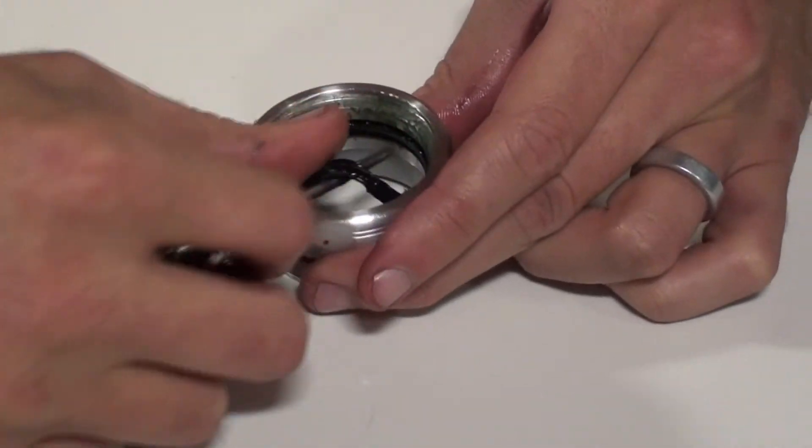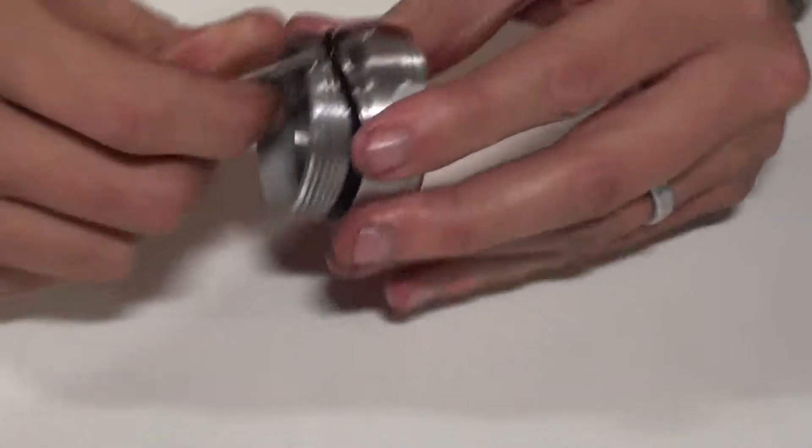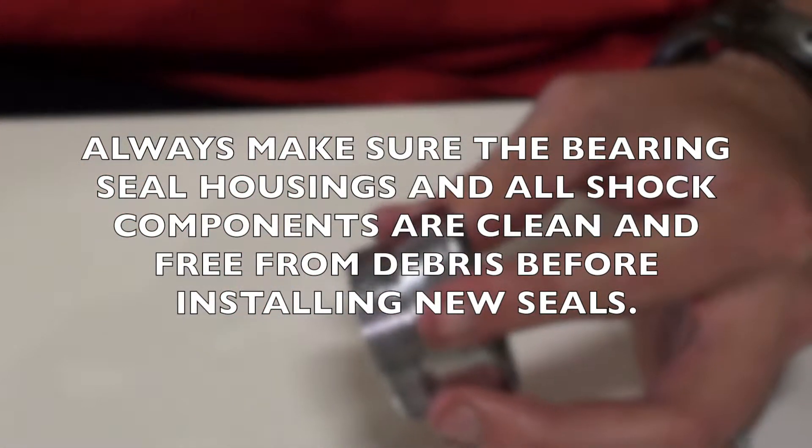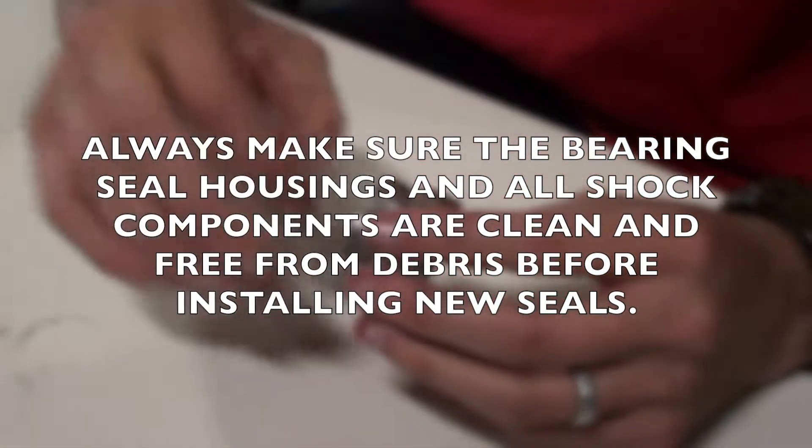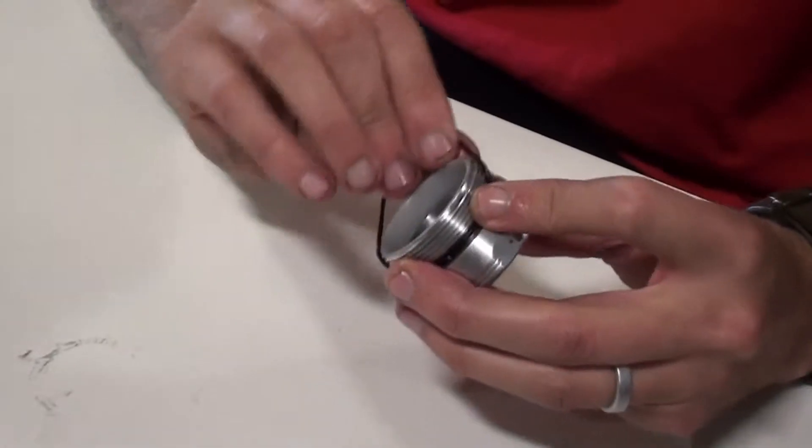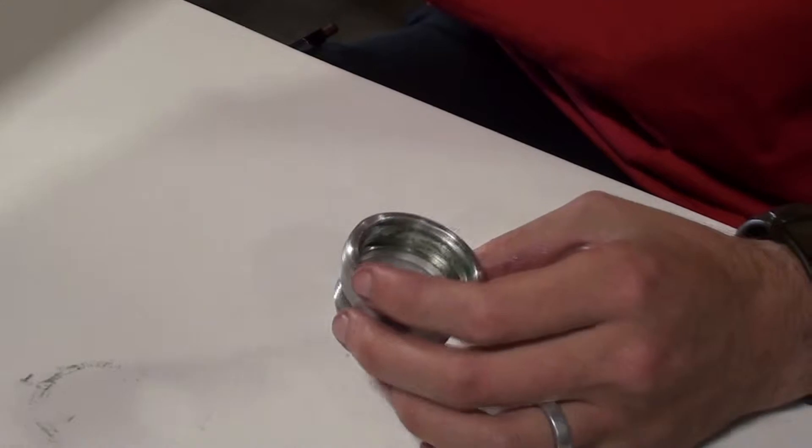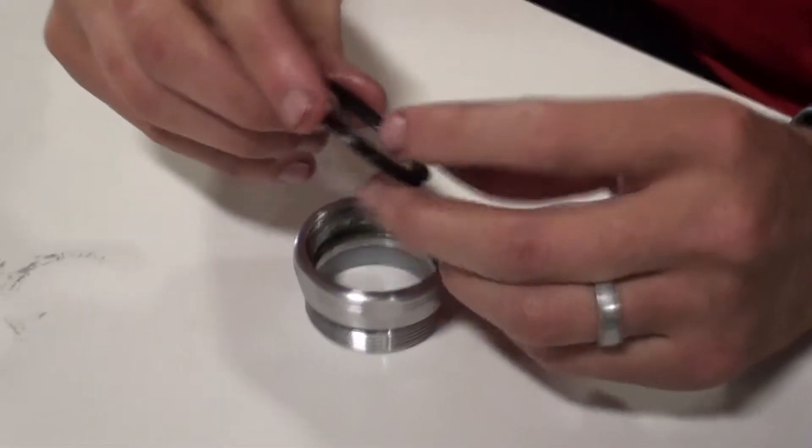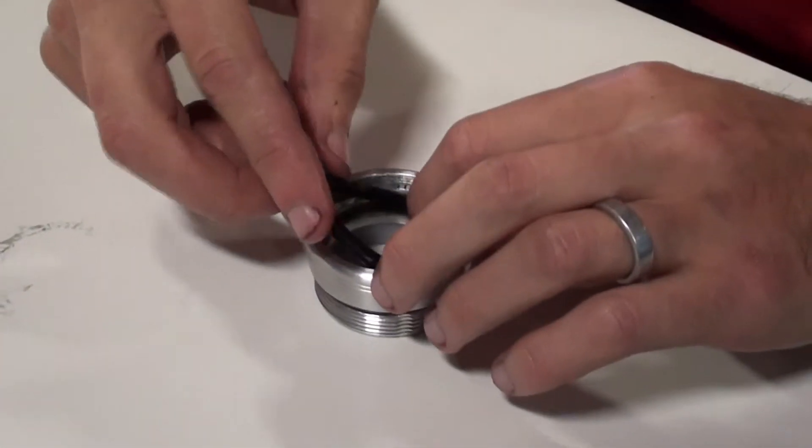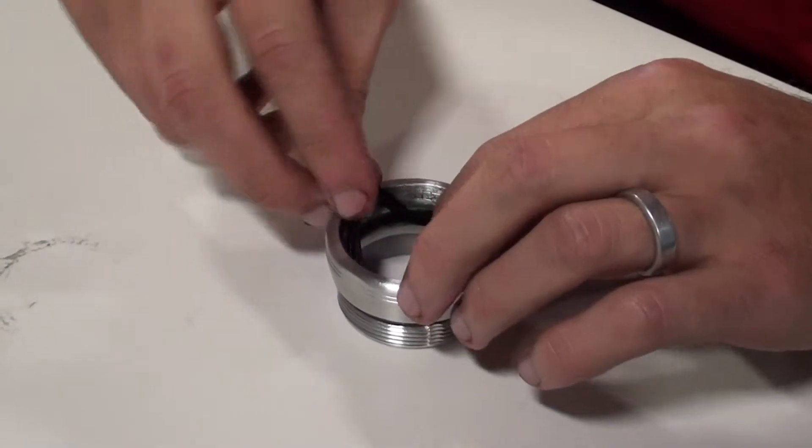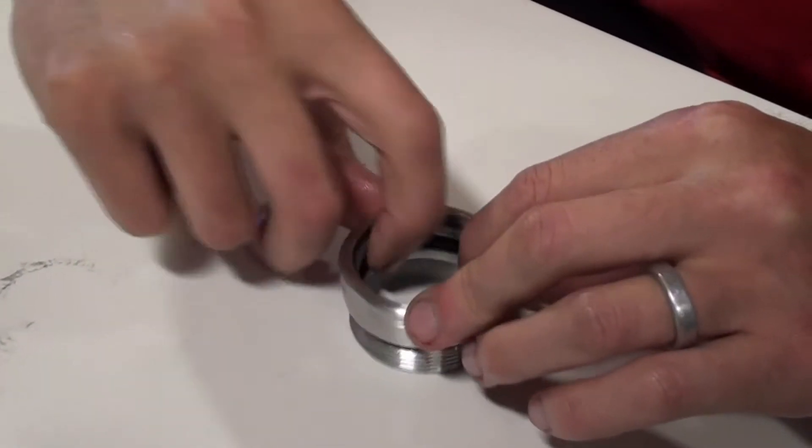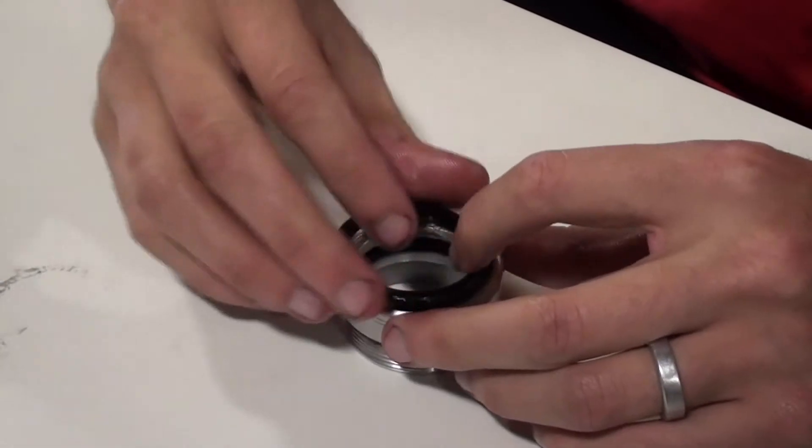Replace your seals carefully. It's easiest to replace your quad seal first, and then your wiper.